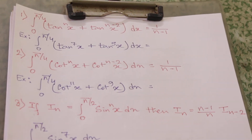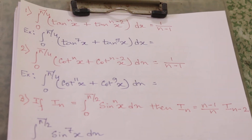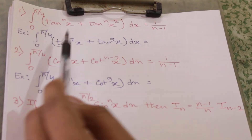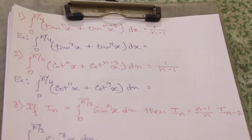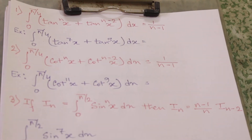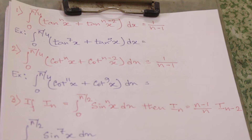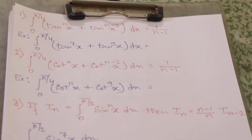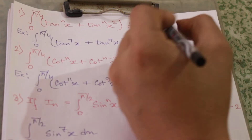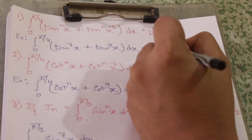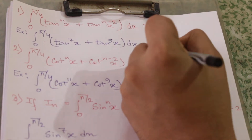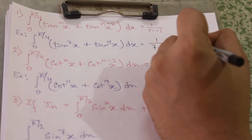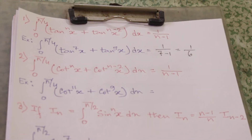Example of this shortcut: integral from 0 to π/4 of tan^7(x) + tan^5(x) dx. Here n is 7 and n-2 is 5, so these two match. We take n = 7, and the final answer is 1/(7-1) = 1/6.